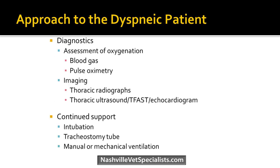Once the patient is more stable, go into diagnostics. Assess oxygenation with a blood gas if able, or pulse oximetry. Get imaging — chest x-rays when the pet is stable enough; nothing dies in x-ray as they say in vet school, but don't stress a pet just to get an image. Thoracic ultrasound or T-FAST can be easier because the pet can sit sternally with oxygen held on them. Continued support may indicate the pet needs to be intubated, may need a tracheostomy if there's airway obstruction, and may need to be manually ventilated.